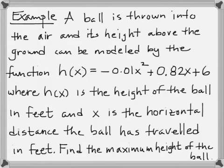In this example we have a ball thrown into the air, and its height above the ground can be modeled by the function h(x) = -0.01x² + 0.82x + 6, where h(x) is the height of the ball in feet and x is the horizontal distance the ball has traveled in feet. What we want to do is find the maximum height of the ball.